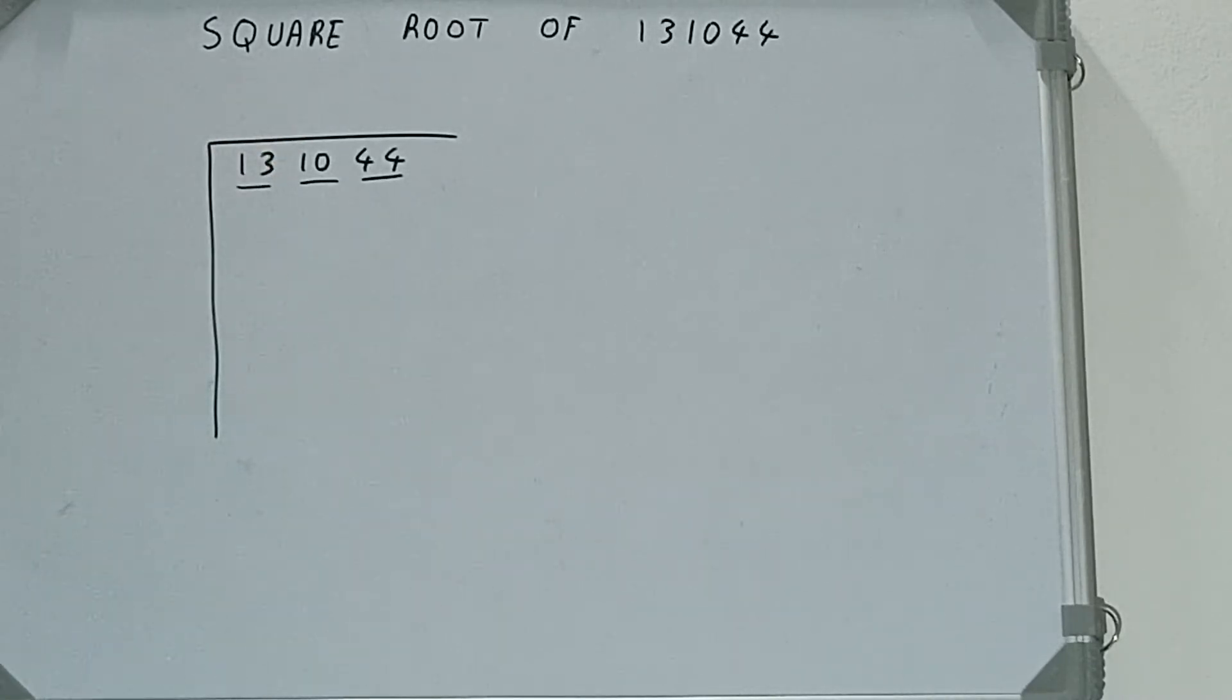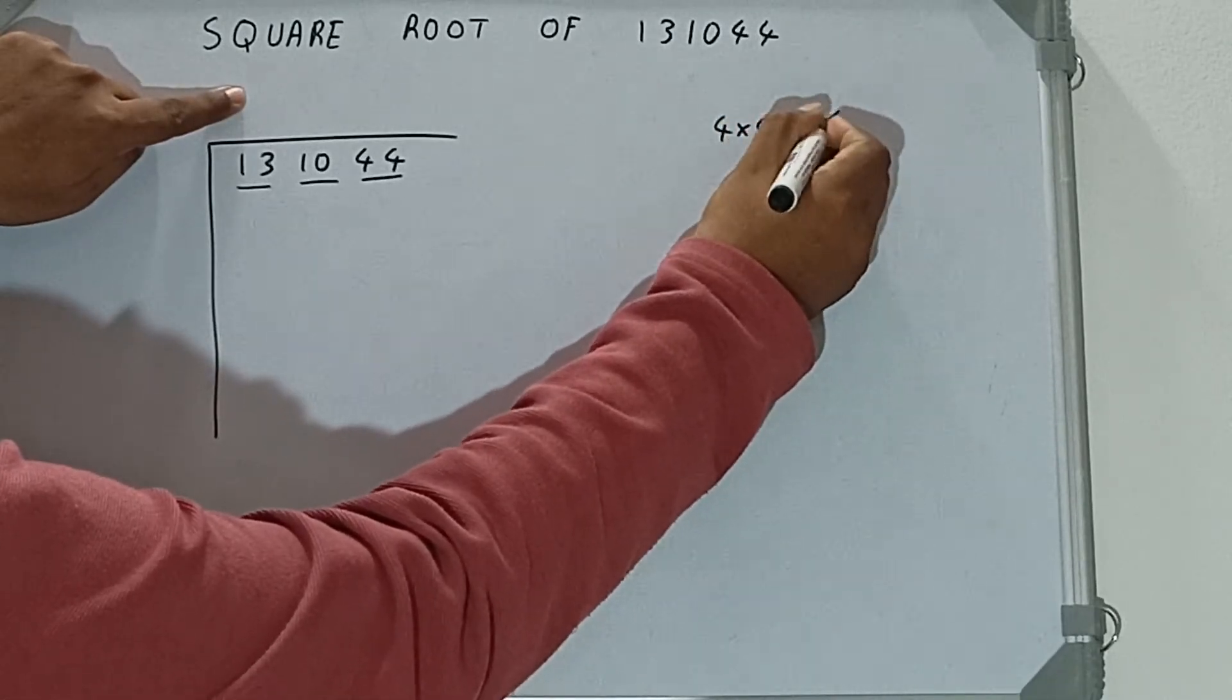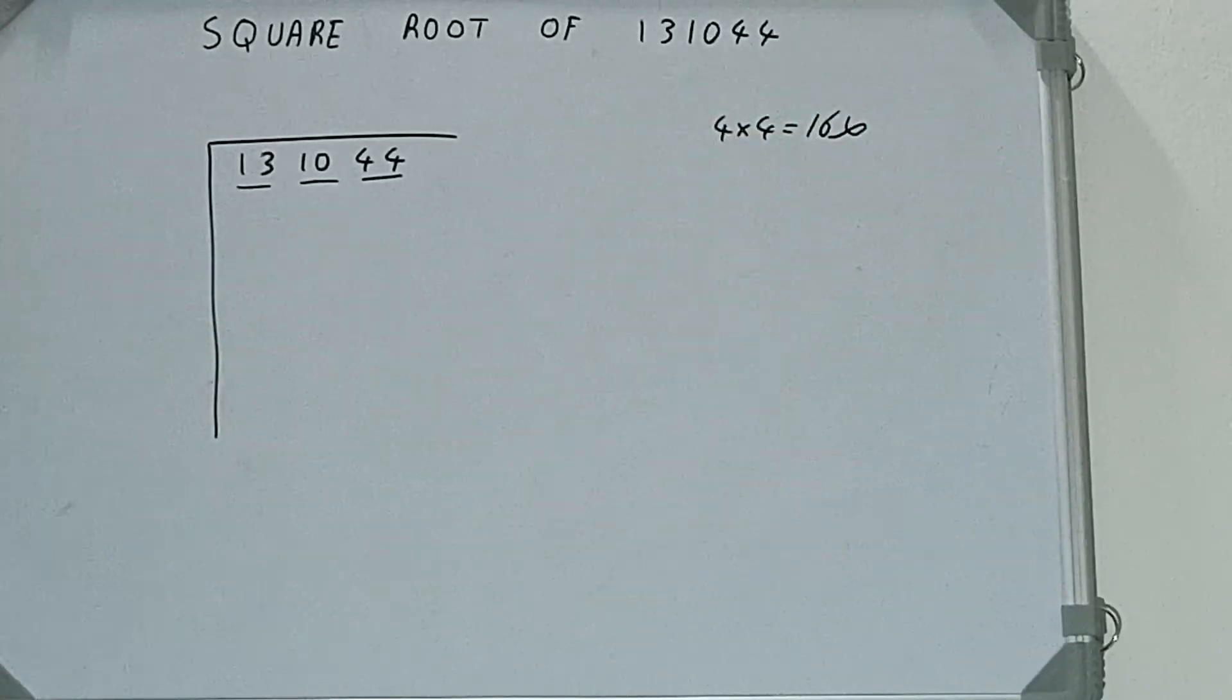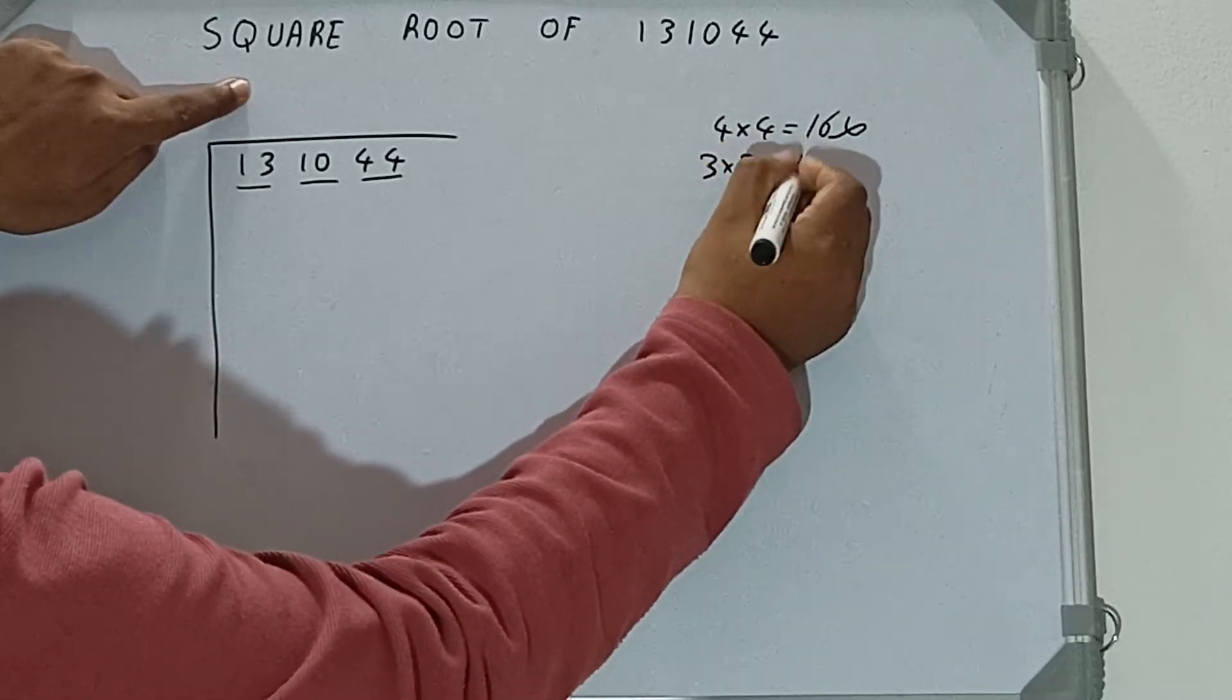If we write 4 here and 4 here, it will be 16, which is greater than 13, so we cannot take it. If we write 3 here and 3 here, it will be 9, which is good to take.